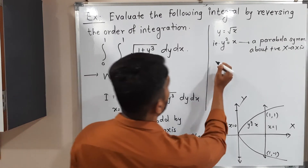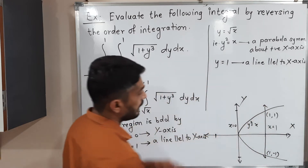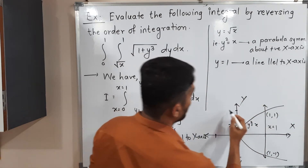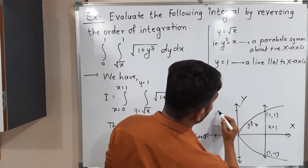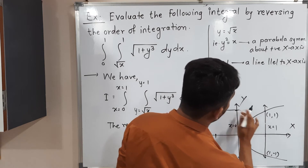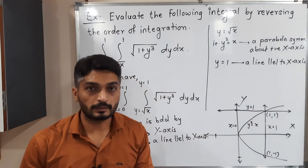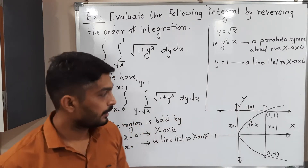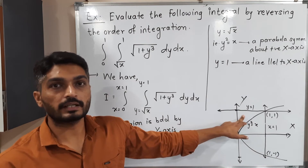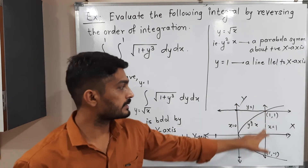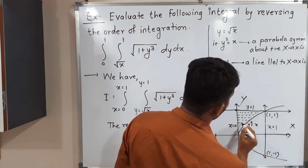The last curve is y = 1, which is a line parallel to the x-axis passing through y = 1. I draw this line through the point (1, 1). So the region of integration is bounded by x = 0, x = 1, the parabola y² = x, and the line y = 1. This region satisfies all conditions and is our region of integration.